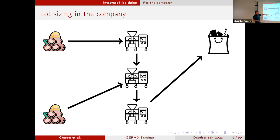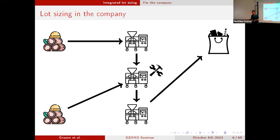Still considering the company point of view, maybe we have machines that will break down, or we need to clean the machines or perform setups. So at some point we need to decide on maintenance operations. This is another possibility to integrate lot sizing decisions with other operational decisions.